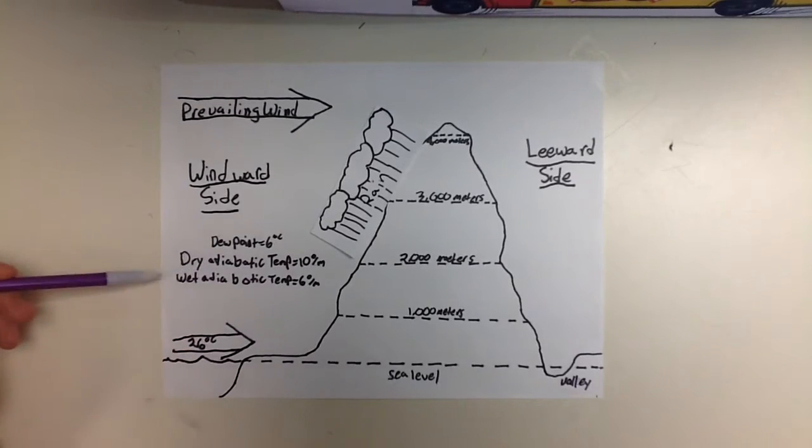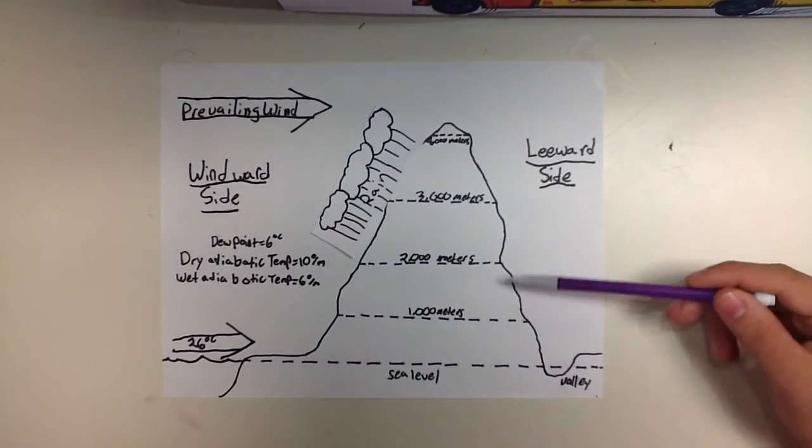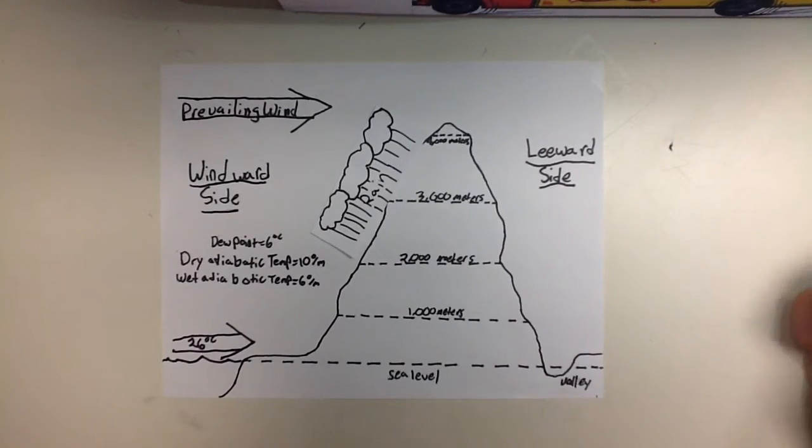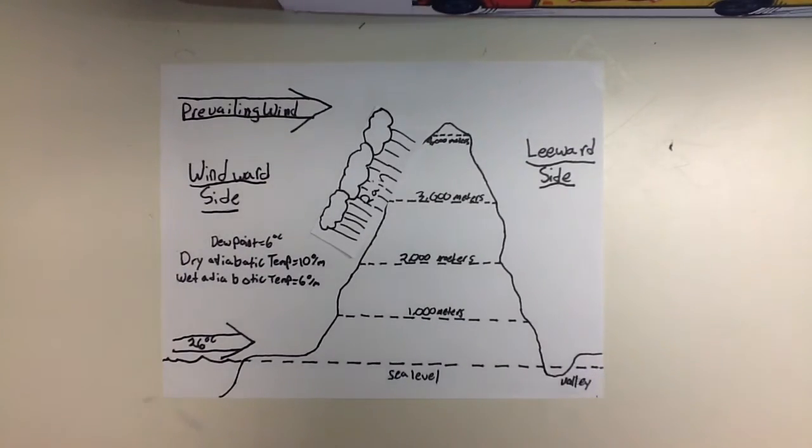To find the temperature going up the windward side, you subtract 10 degrees Celsius for every thousand meters in a dry area and 6 degrees Celsius for every moist area. Going down on the leeward side, you only add 10 degrees Celsius for every thousand meters. Now let's put it in context.